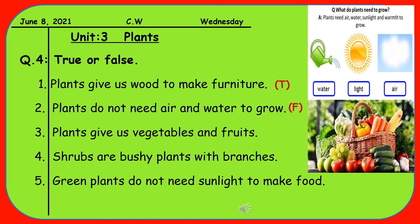Sentence three is: Plants give us vegetables and fruits. All the vegetables and fruits we eat, we get from plants. So it is one hundred percent correct — write T for True.